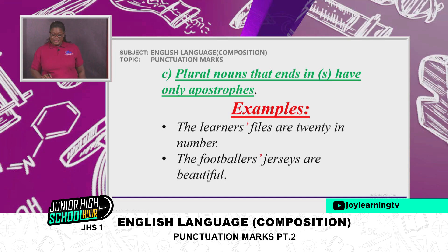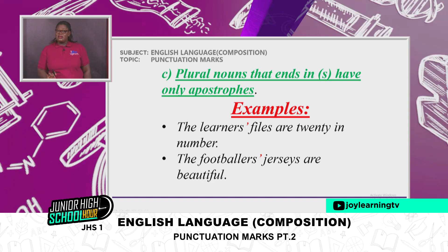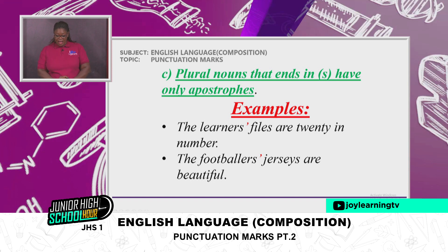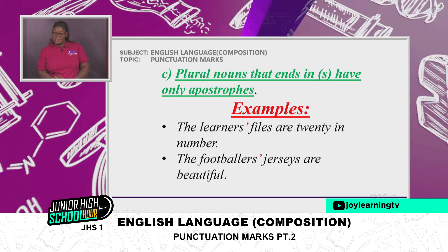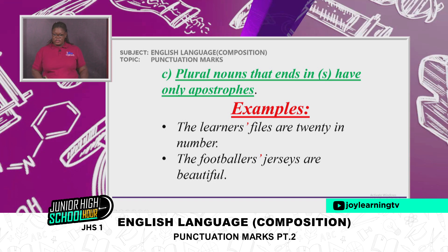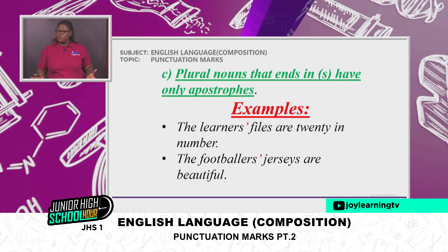Plural nouns that end in S have only an apostrophe. Examples: 'The learners' files are 20 in number.' — 'learners' is plural, so it ends in apostrophe only. 'The footballers' jerseys are beautiful.' — 'footballers' is plural, so it ends in S with an apostrophe after.